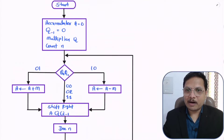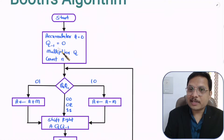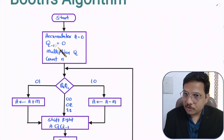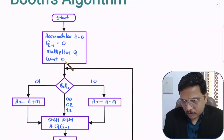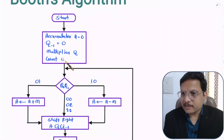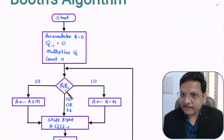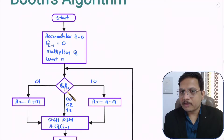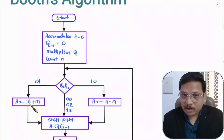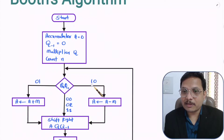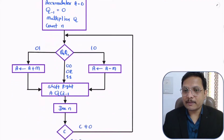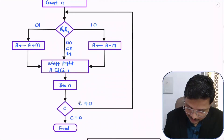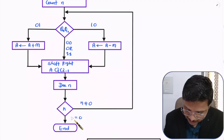Based on this flowchart, you can understand the complete process. First, initialize: accumulator = 0, q-minus-1 = 0, load the multiplier, set count n based on number of bits. Then execute steps equal to the count: if q0,q-minus-1 is 0,0 or 1,1 just shift right; if 0,1 add M; if 1,0 subtract M. Note: I wrote 'c' but the variable should be 'n'.